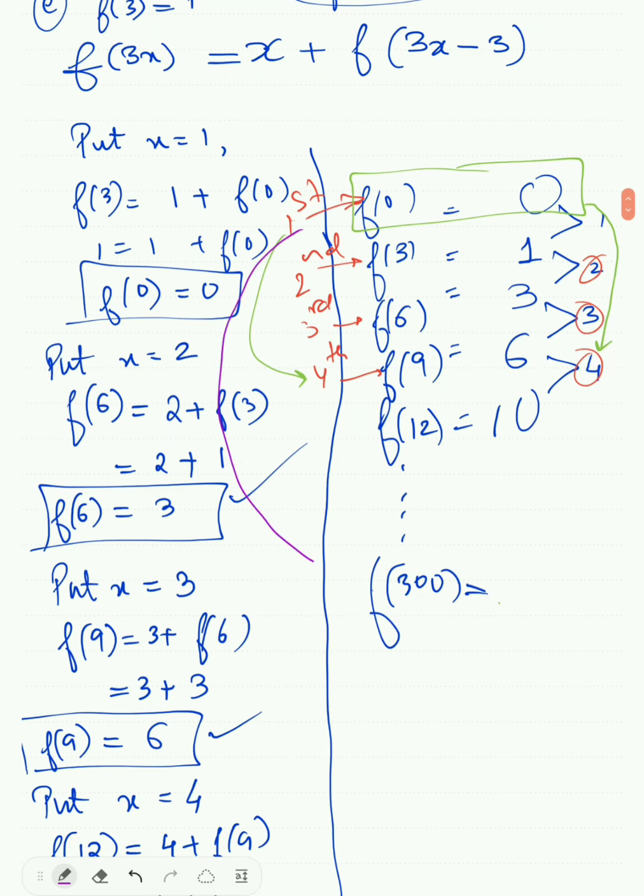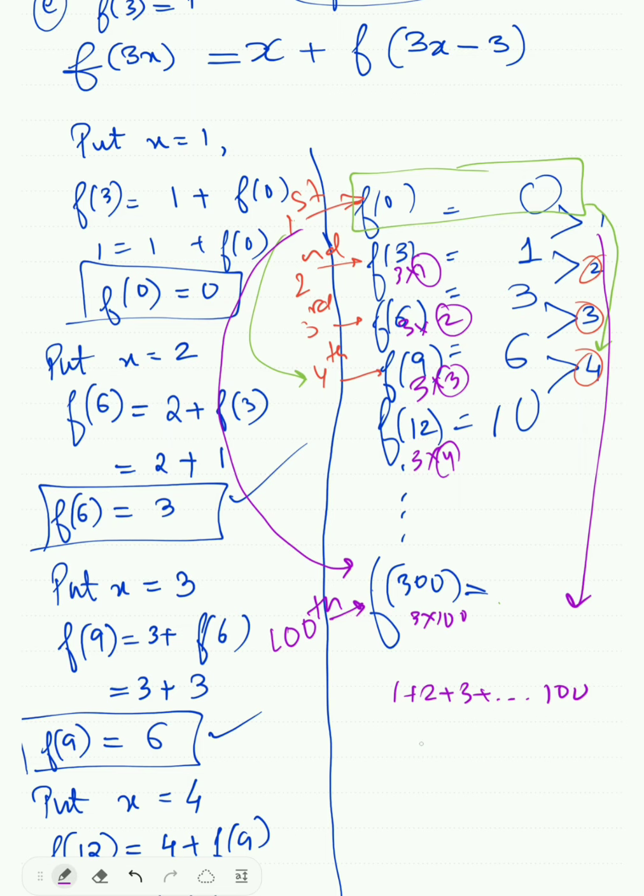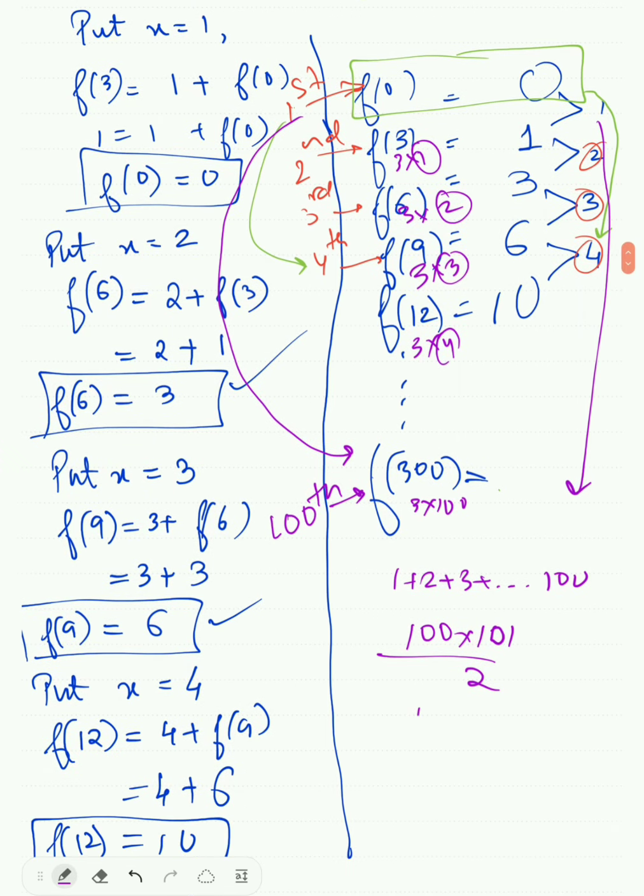For f(300), this is 3 into 100, which is the 100th term. How many numbers to add? That is 1 plus 2 plus 3 up to 100. The sum will be n into n plus 1 divided by 2. So I get 100 times 101 divided by 2 equals 5050.